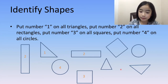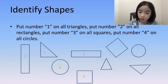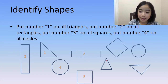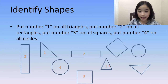Now, let's look at this shape over here. It has three corners and three sides. So, this is a triangle. Let's put the number one on this triangle.